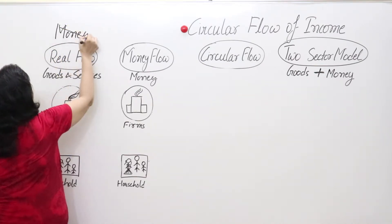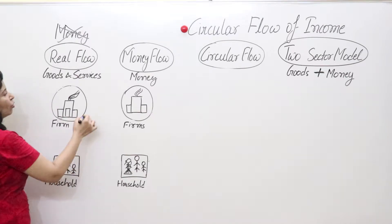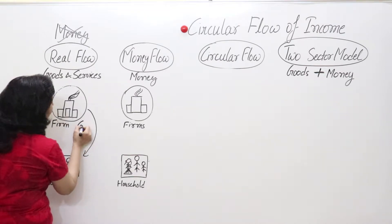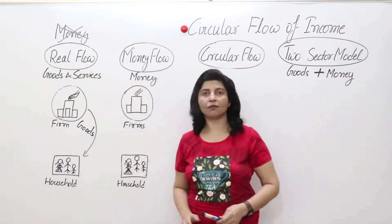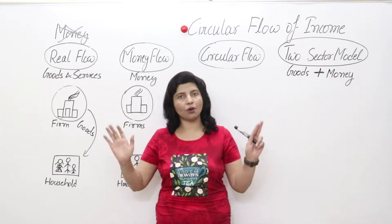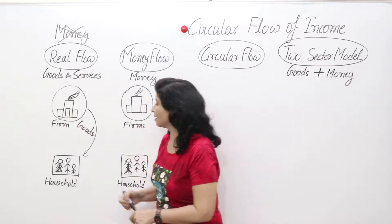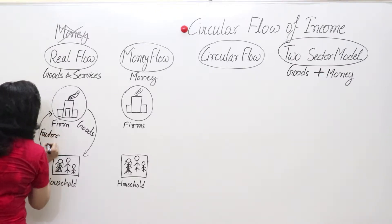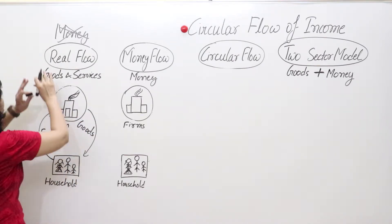You don't have a single penny, so what do you do? You need food — you can take goods or commodities from firms. But when you take goods from a firm, you have to give something in return. Since there is no money, you give your labor — your hands and brain to serve them. So you give them factor services. In real flow, you get goods from firms and give services to them.